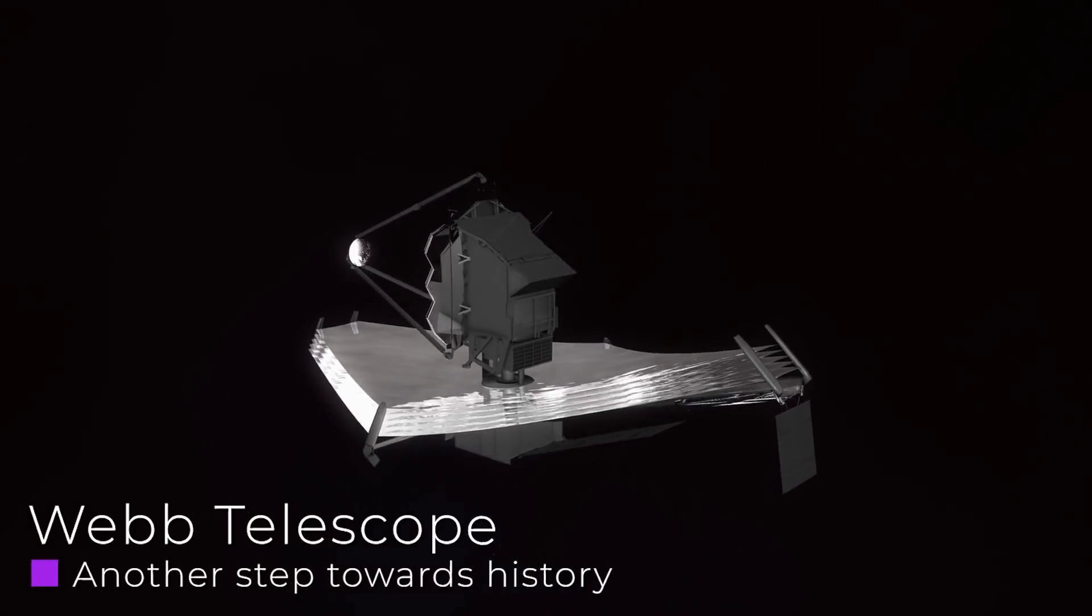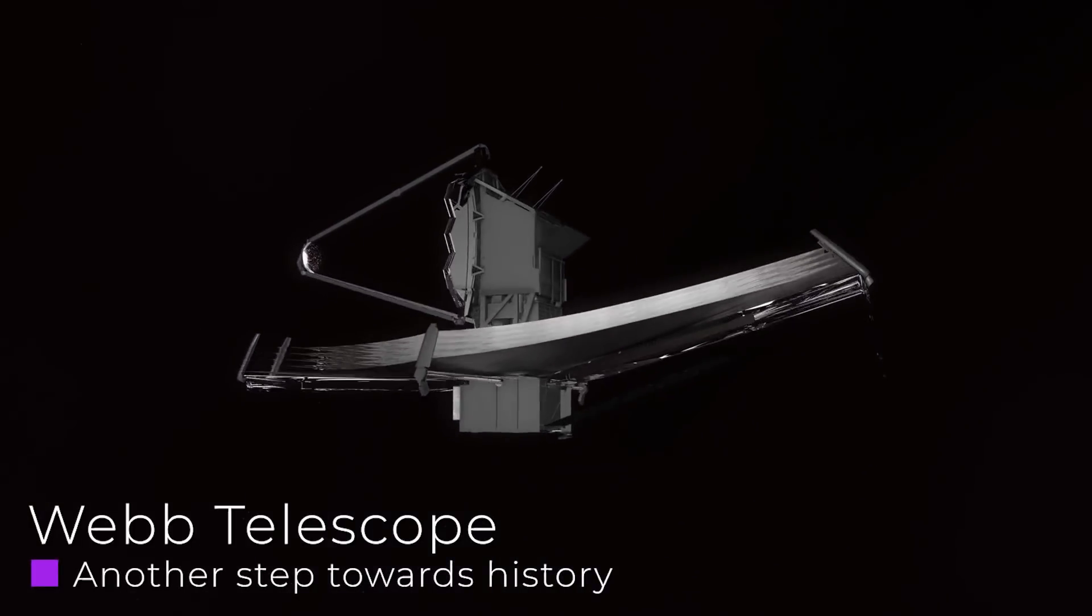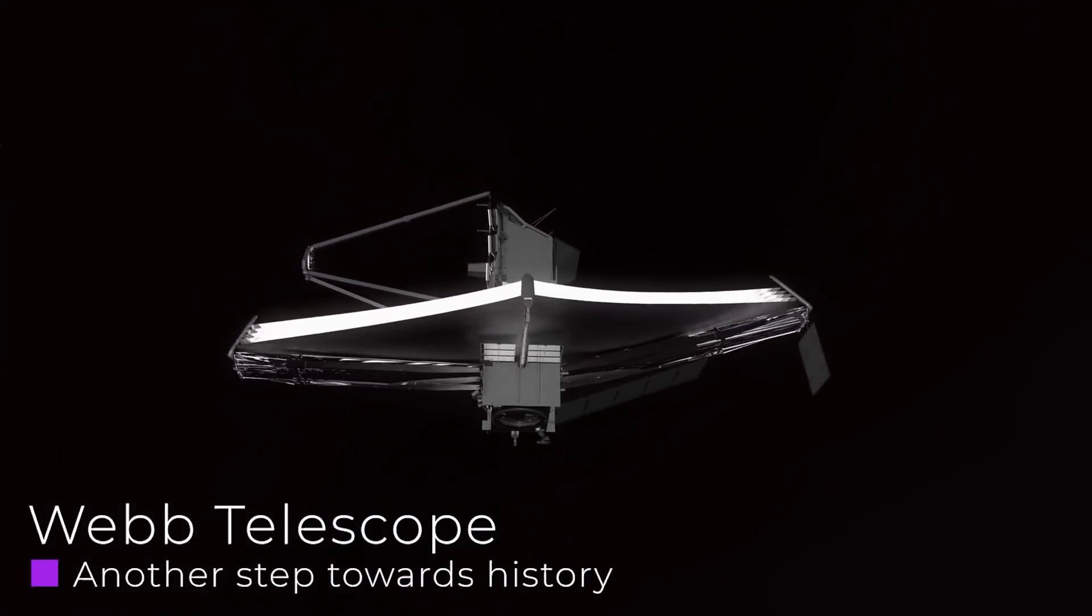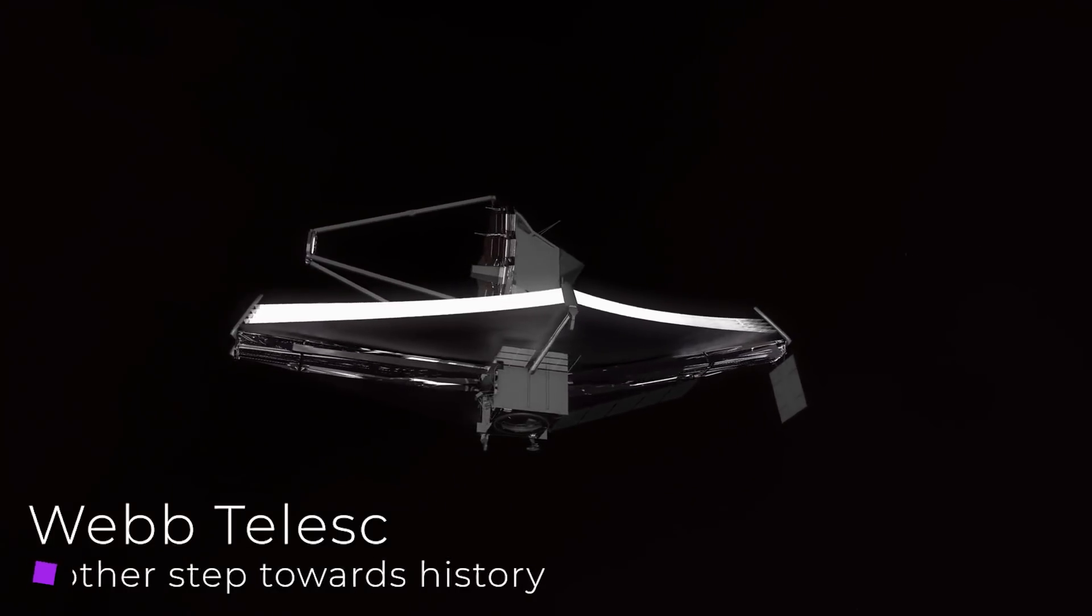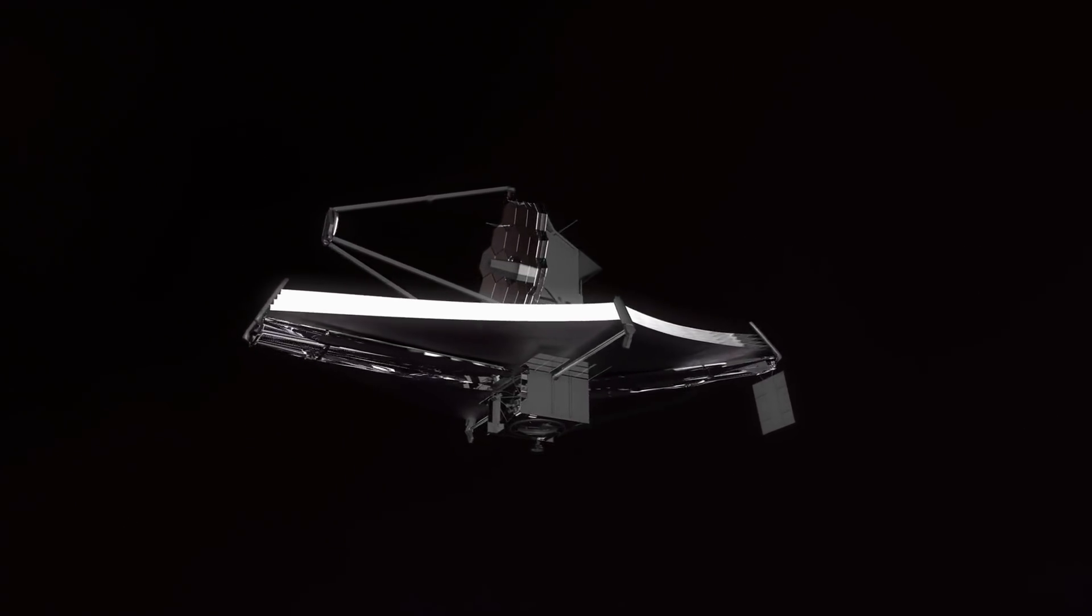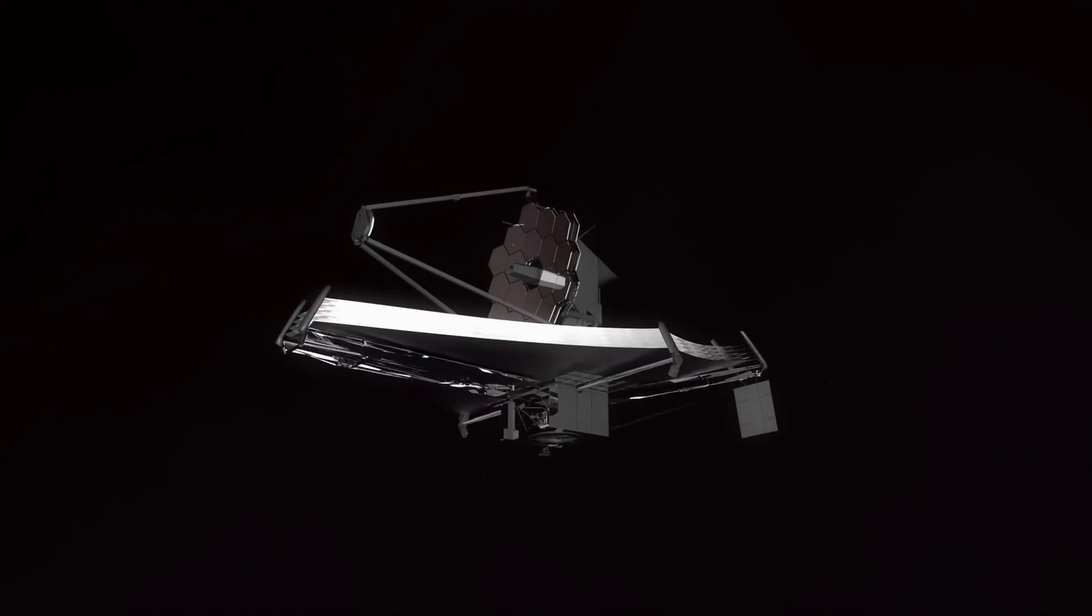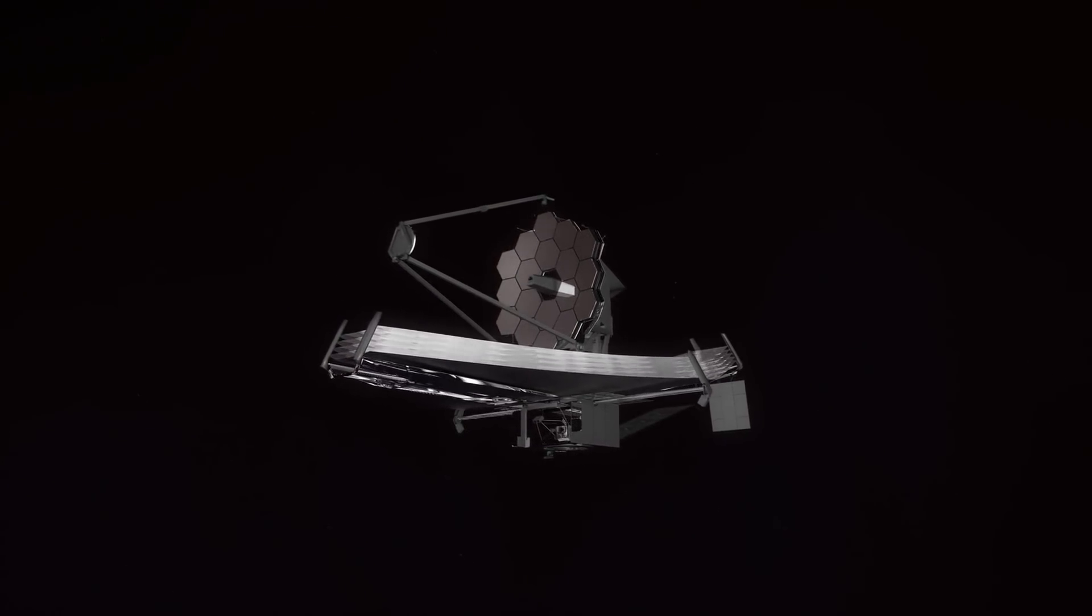Webb Telescope: Another step towards history. On February 10, NASA has published the first image made by the James Webb Space Telescope. It is a collage of 18 different images, each made by one of the 18 segments that make up the primary mirror.